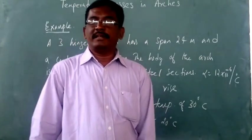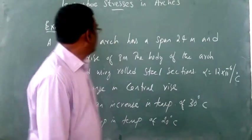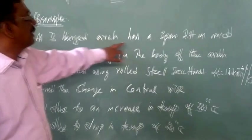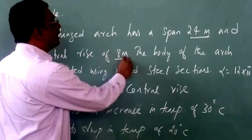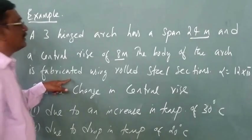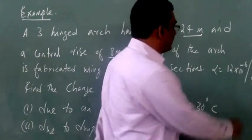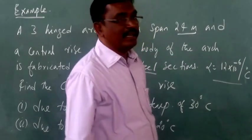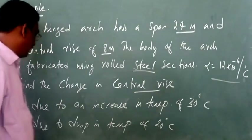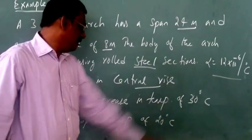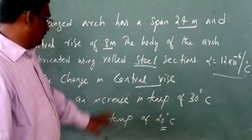To study the change in temperature in case of a three-hinged arch, let us take an example. The example is: a three-hinged arch has a span of 24 meters and a central rise of 8 meters. The body of the arch is fabricated using a rolled steel section. The coefficient of thermal expansion is given as 12 × 10⁻⁶ per degree centigrade. We have to find the change in central rise due to an increase in temperature of 30°C and due to a drop in temperature of 20°C.